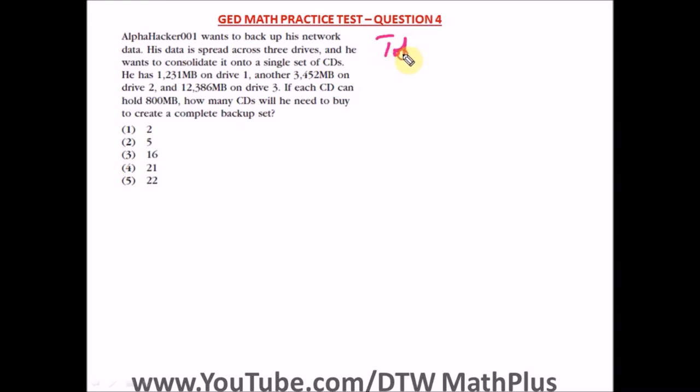So total data is 1,231 plus 3,452 plus 12,386 MB. And if you're punching your calculator, you should get 17,069 MB. That's 17,069 MB.